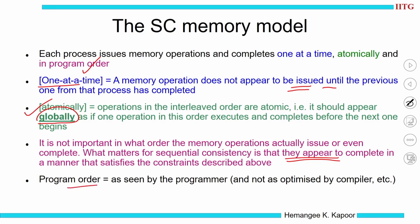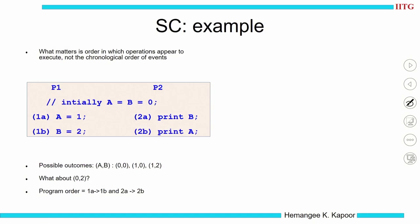They should appear to complete in a manner consistent with program order. And when I say program order, it is as seen by the programmer, not as optimized by the compiler — because as a programmer reasoning about the program, I only see the code I wrote, not what was optimized by the compiler. Let us take an example: we have two processes P1 doing instructions 1A and 1B, and P2 doing 2A and 2B.